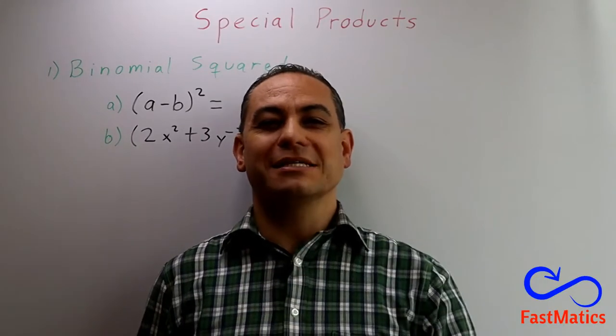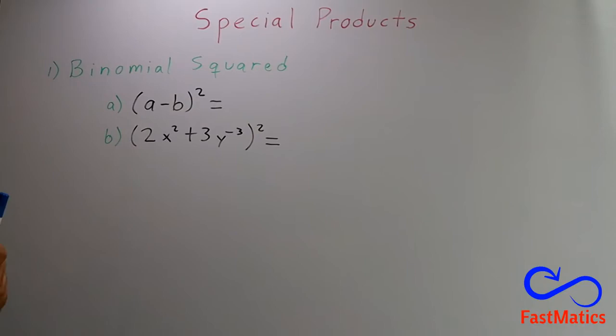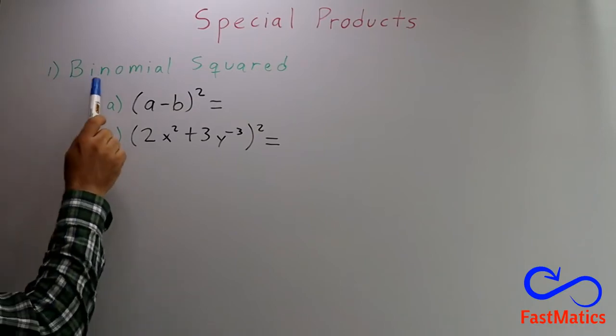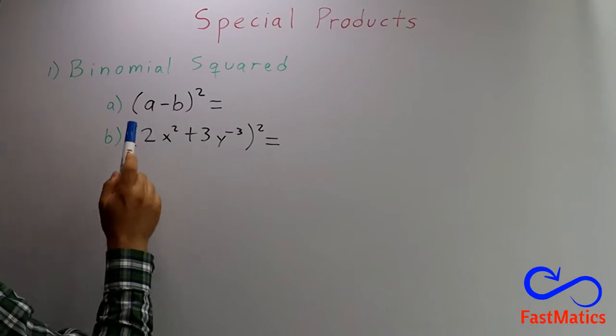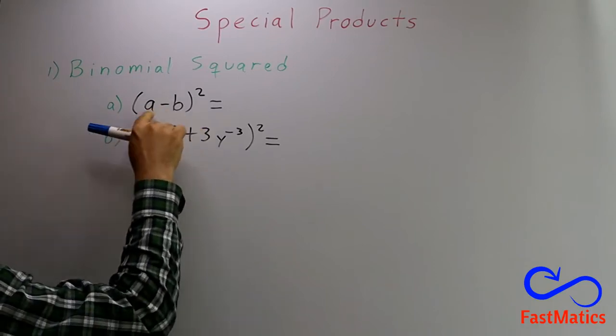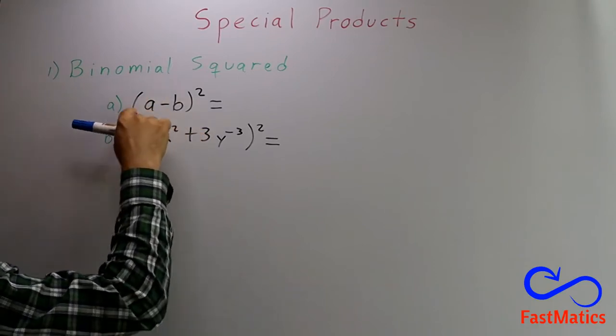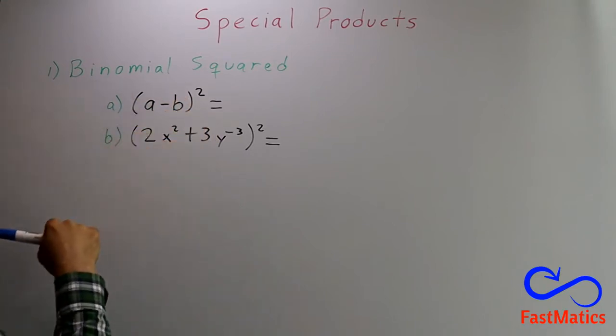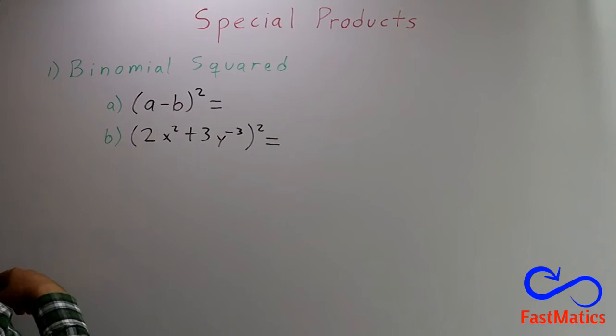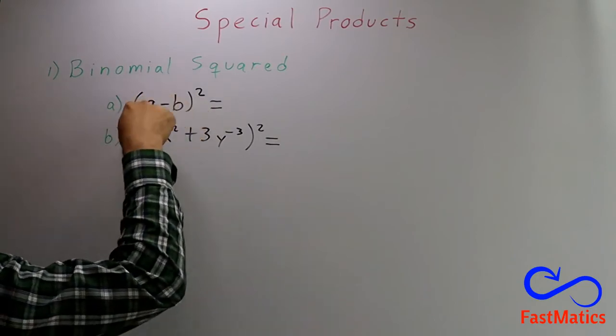Let's go, please! Well, the first case is the binomial squared. That means that you are going to have two terms. Remember, one term separated by a negative sign of another term. And those terms are squared.